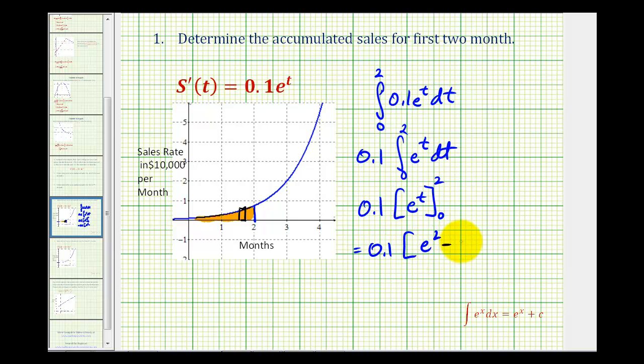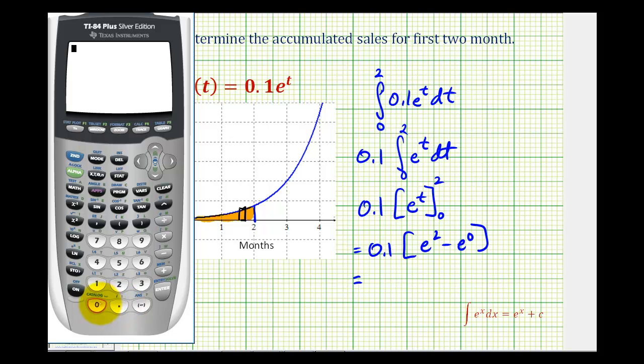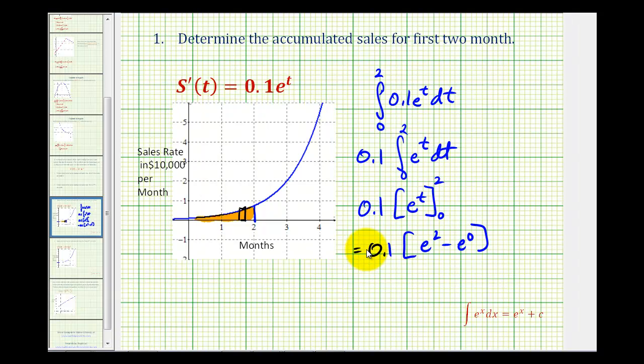So we'll have e squared minus e to the zero. Well, e to the zero is equal to one, so let's go to our calculator. So we'll have zero point one times e squared minus one. So this is approximately zero point six three eight nine.